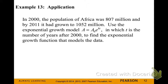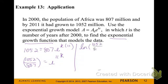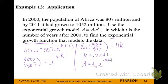In 2000, the population of Africa was 807 million, and by 2011 it had grown to 1,052 million. Using T as years after 2000, we find the exponential growth function. Plugging in the ending amount, beginning amount, and 11 years, we divide by 807, rewrite as a natural logarithm, and divide by 11. The k value is about 0.0241, so the growth function is A = 807 × e^(0.024T).